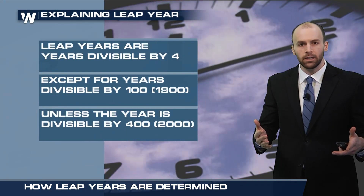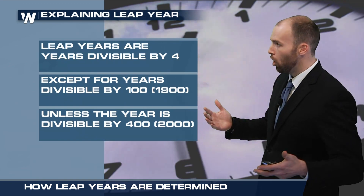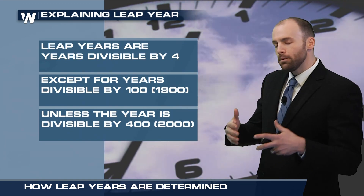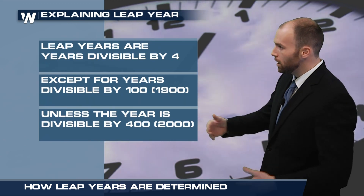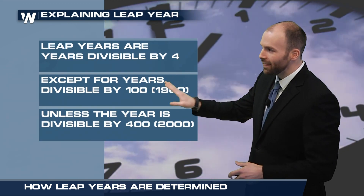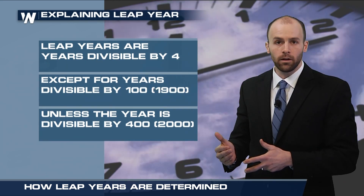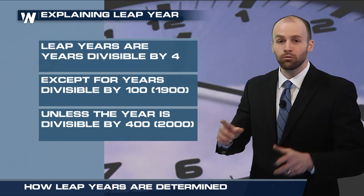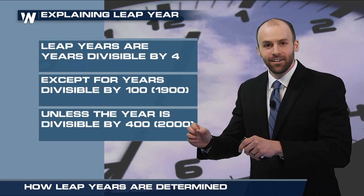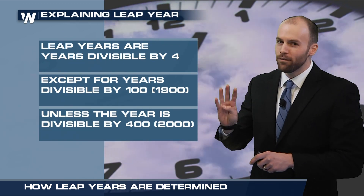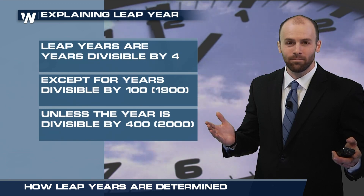But how is it calculated? Using the Gregorian calendar, which most of us use across the globe, leap years are not technically every four years. They occur in years divisible by four, unless that year is also divisible by 100. For instance, 1900 was not a leap year — unless that year is also divisible by 400. For instance, 2000 was a leap year.